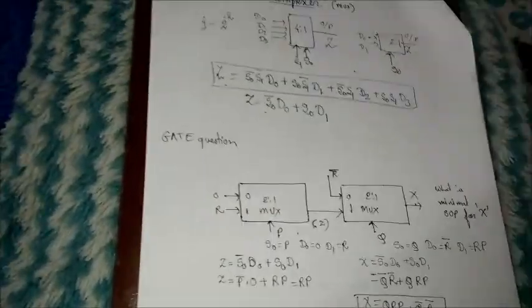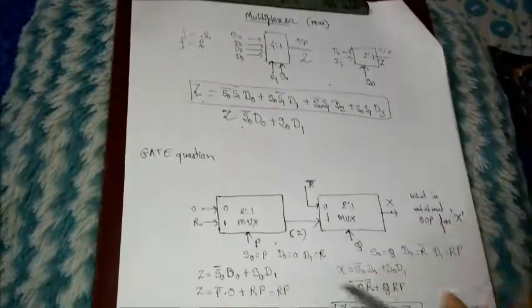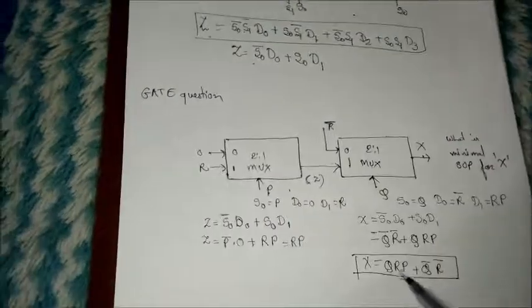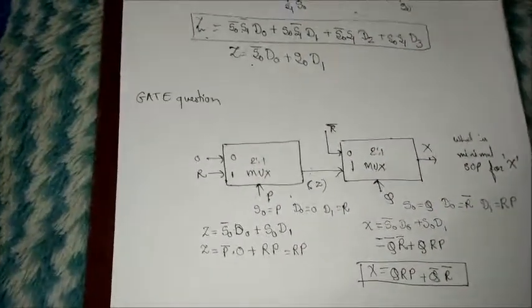So this is the simple 2-to-1 MUX, and we have also seen the 4-to-1 MUX. You can easily find out the output by using the characteristic equation of that MUX, whether it is 2-to-1 or 4-to-1.